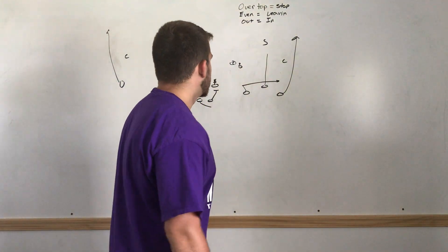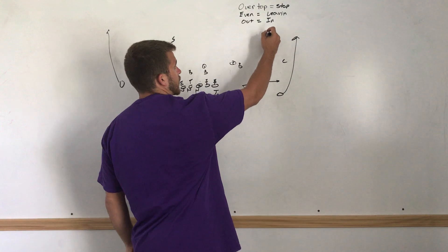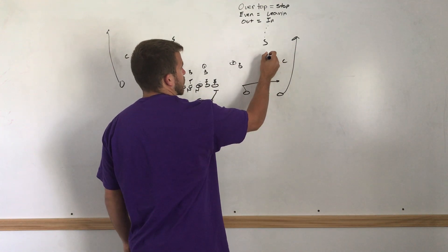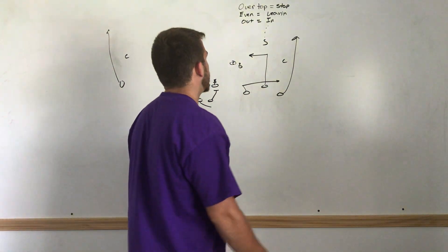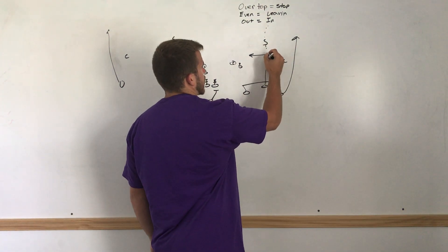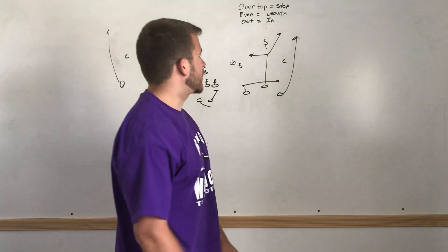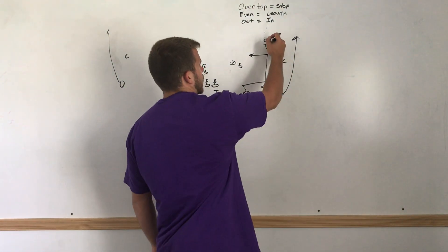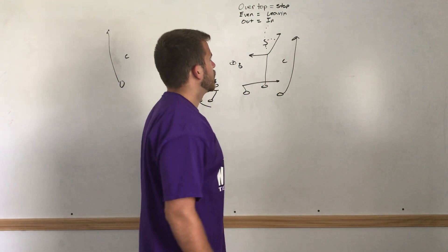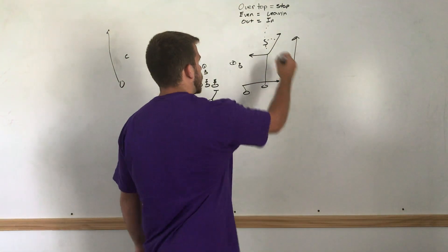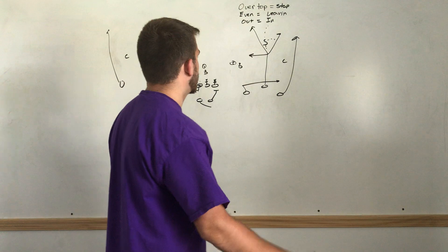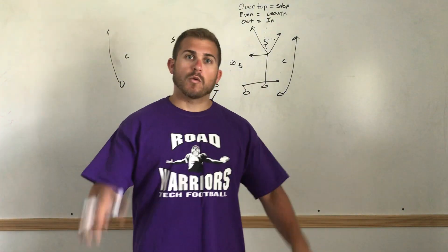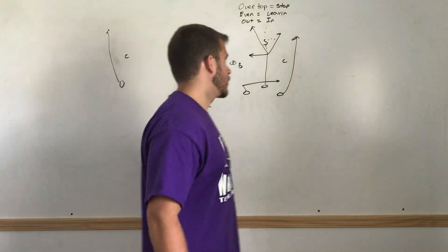All right, so basically if this safety is over top we're going to stop, run the dig. If the defender is even we're leaving, going to press that seam fade. And if the defender gets too far on our outside shoulder we're going to bang the post, which could be deadly there.